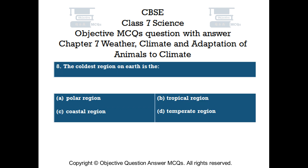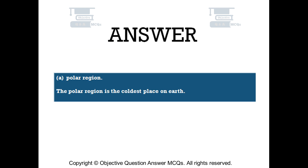Question number 8. The coldest region on earth is: Option A — polar region. Option B — tropical region. Option C — coastal region. Option D — temperate region. The right answer is Option A: polar region. The polar region is the coldest place on earth.